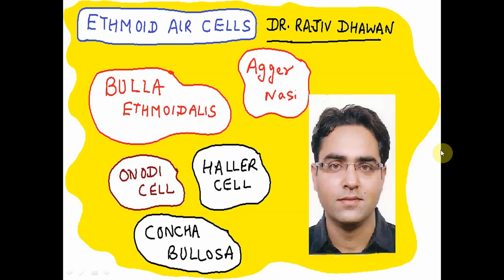Hello everyone. The topic of this presentation is ethmoid air cells. I am sure you would have heard these words: bulla ethmoidalis, agger nasi, Onodi cell, Haller cell, concha bullosa. They are really very easy things to understand, and in this presentation we will try to understand them and see them radiologically as well.